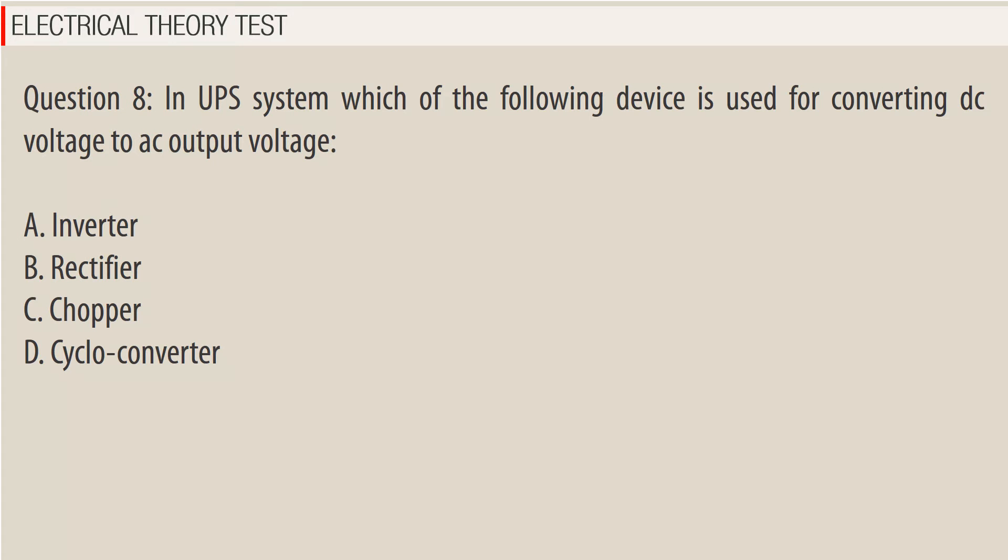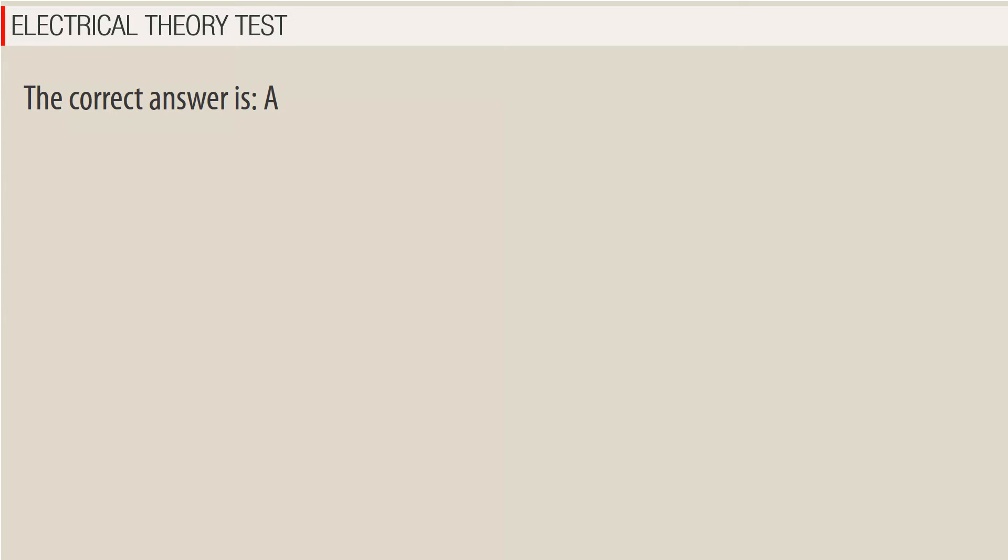Question 8. In a UPS system, which of the following devices is used for converting DC voltage to AC output voltage? A. Inverter. B. Rectifier. C. Chopper. D. Cyclo converter. The correct answer is A — Inverter.